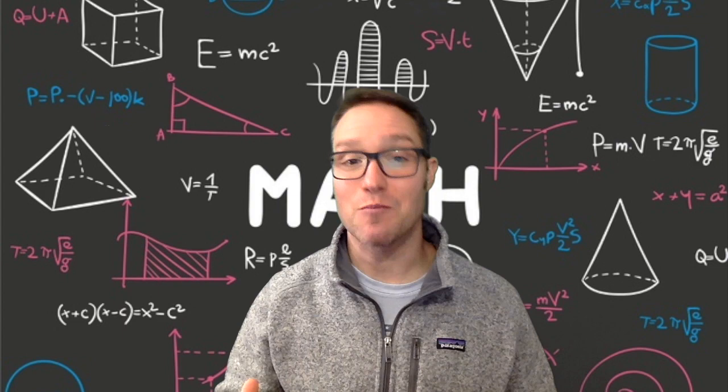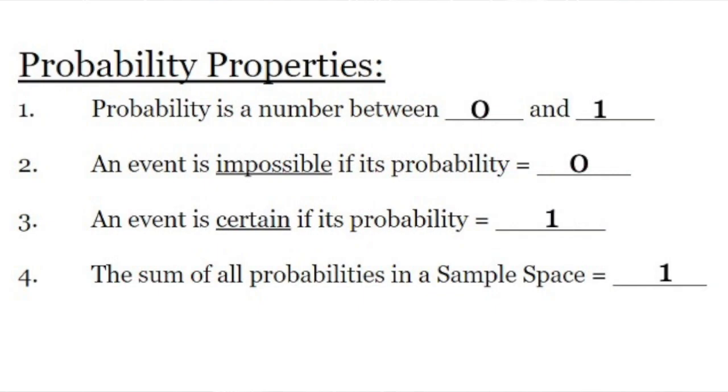Okay, so here are the completed properties. Probability is always a number between zero and one. An event is impossible if its probability is zero. An event is certain if its probability is one, and the sum of all probabilities in a sample space has to equal one.